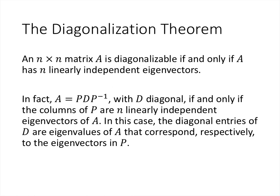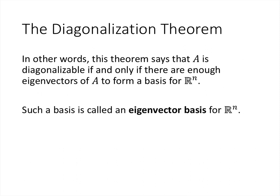So how do we know when a matrix is diagonalizable? It would be nice if every matrix were diagonalizable, but unfortunately that's not true. An n-by-n matrix A is diagonalizable if and only if it has n linearly independent eigenvectors. More specifically, A = PDP⁻¹ with D diagonal if and only if the columns of P are n linearly independent eigenvectors, and the diagonal entries of D are the corresponding eigenvalues. This is not unique since each eigenvalue may have many eigenvectors. Equivalently, A is diagonalizable if and only if there are enough eigenvectors to form a basis for ℝⁿ — called an eigenvector basis.